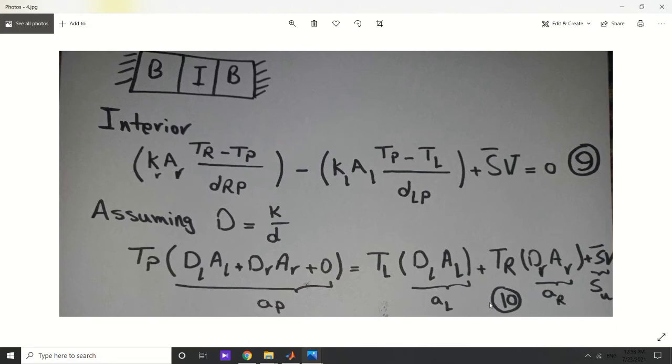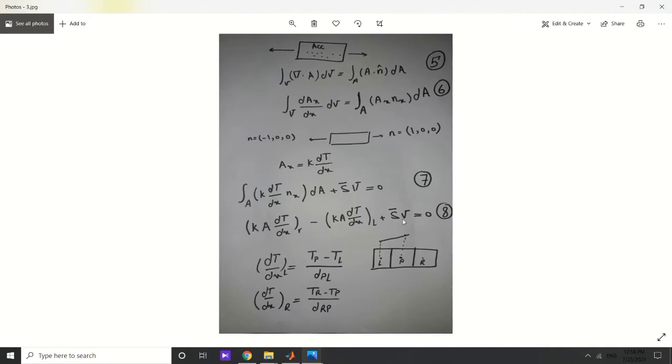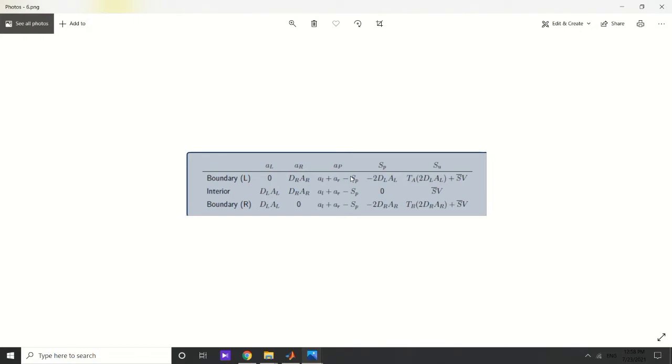I use these coefficients for consistency sake. For the left boundary, the only difference is the distance between our interested point and left is half of the interior cells, and only replacing it into the eighth equation you will get this.